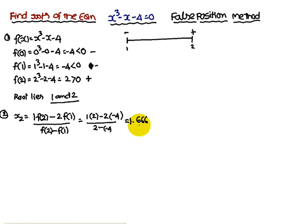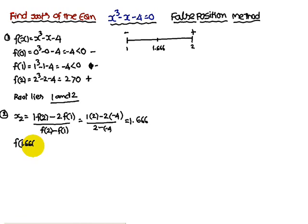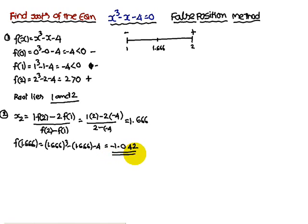Always represent the new x value on the real line — x₂, x₃, x₄, and so on. Represent x₂ = 1.366 on the real line and assign its sign by evaluating f(1.366) = 1.366³ - 1.366 - 4 = -1.042, which is negative.